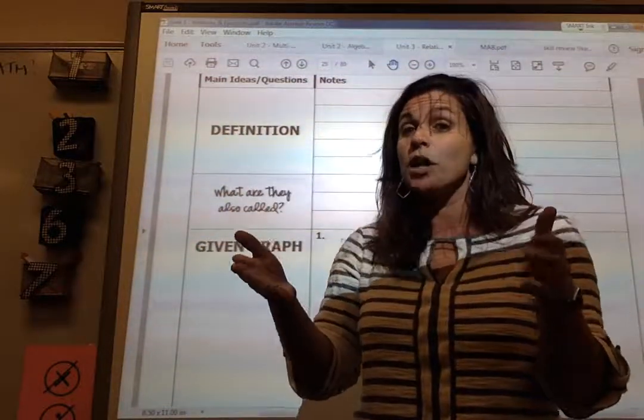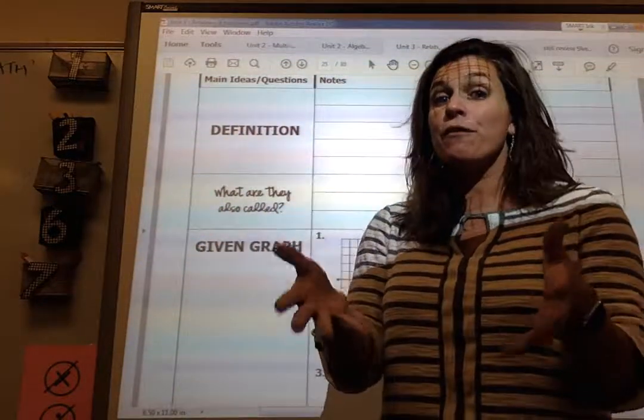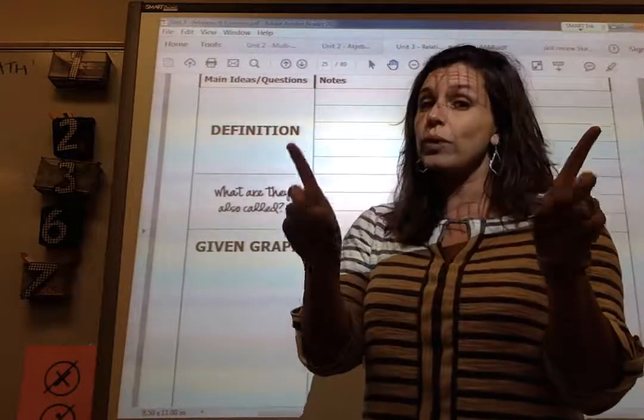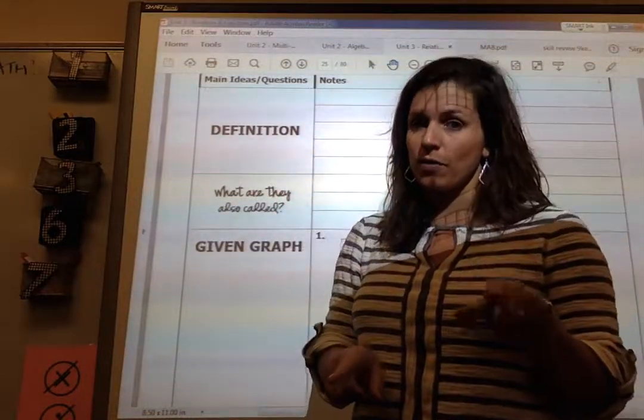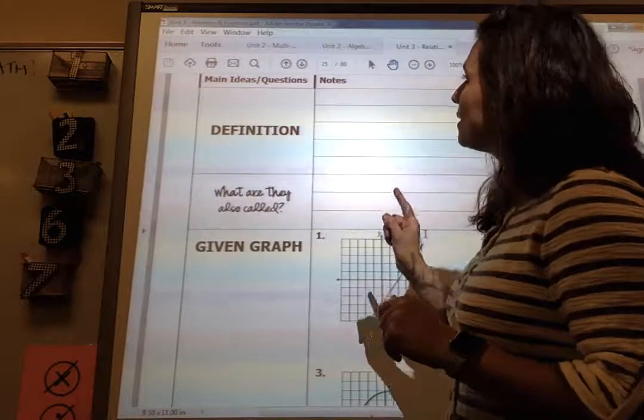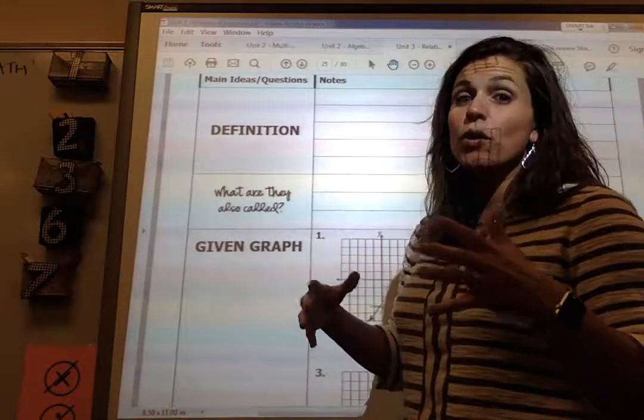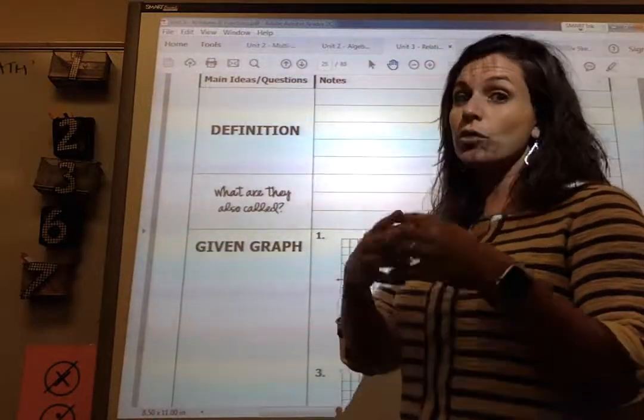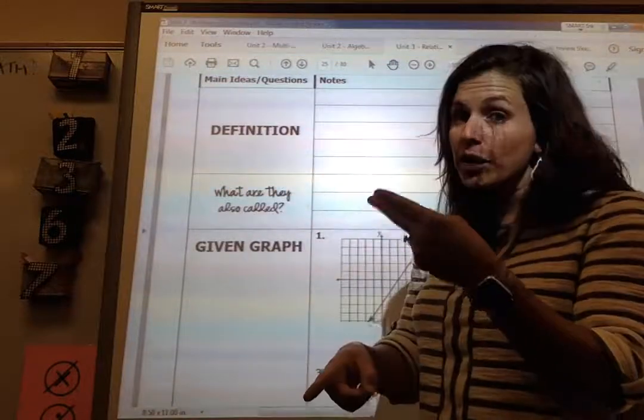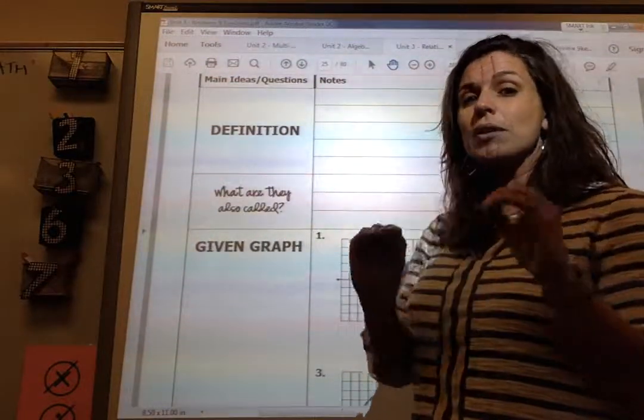It gets more specific when we talk about functions because now a function is a special relation which your x values can't repeat. What we're going to be dealing with today is zeros of functions. So now we know we're talking about a function. Yes, it's a relation. And now we're looking at the zeros of functions.